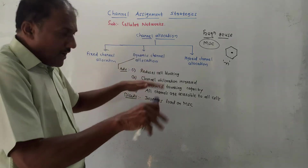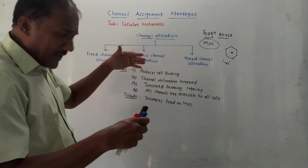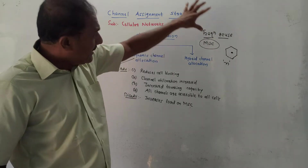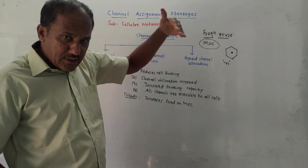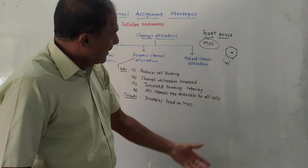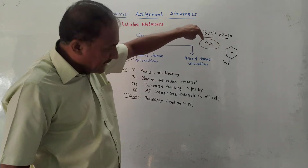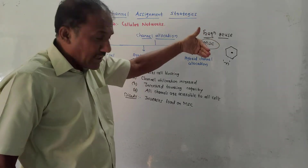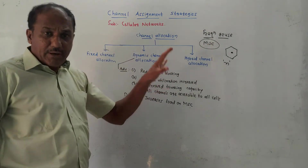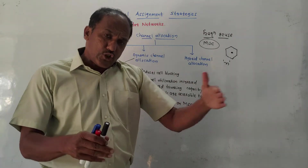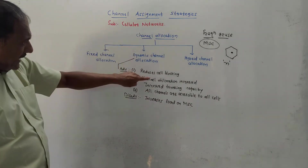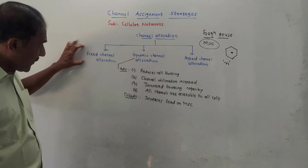In dynamic channel allocation, no fixed channels are pre-assigned to any cell. Whenever you make a call, the cell sends a request to the MSC for allocation of a channel. The MSC searches for a free channel in that cell as well as in adjacent cells, and accordingly allocates a channel, while taking care that there is no interference due to the use of that channel.